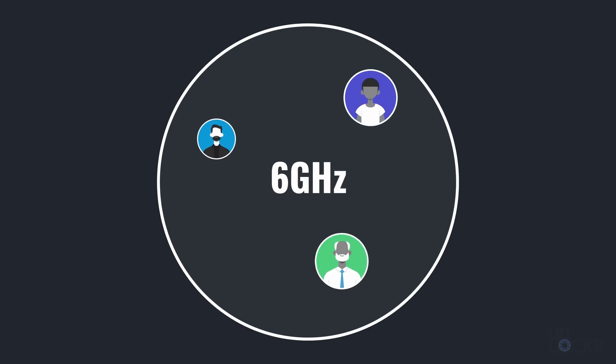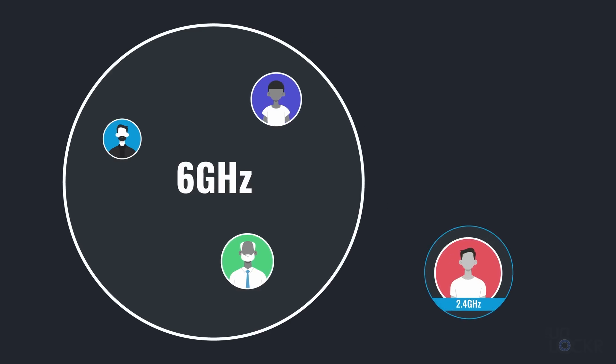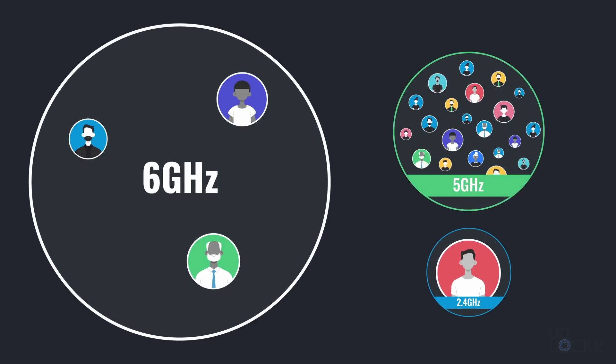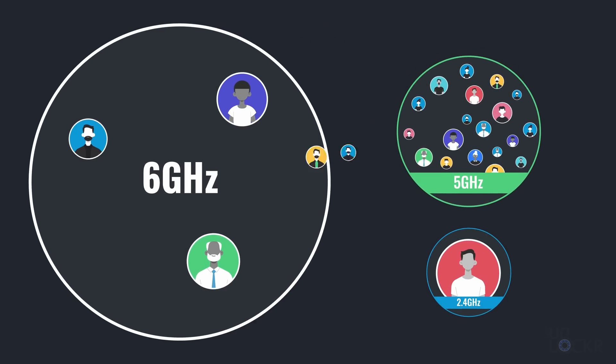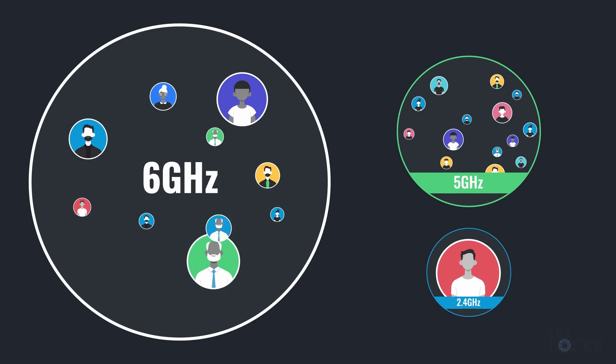The 6 gigahertz band gives everyone a much larger swath of spectrum to use within it, but also, as more people adopt it, it'll even free up the 2.4 and 5 gigahertz channels by taking devices off of those and give everyone more breathing room, which right now we're really starting to need as we have a lot more Wi-Fi connected devices in our homes, our workplaces, and so do all of our neighbors.